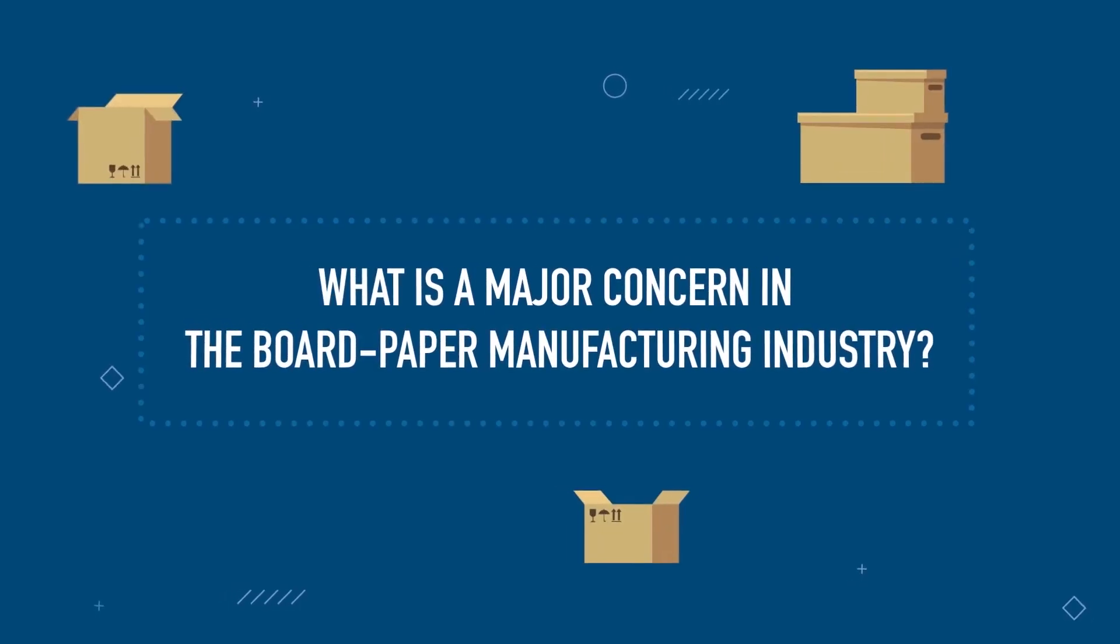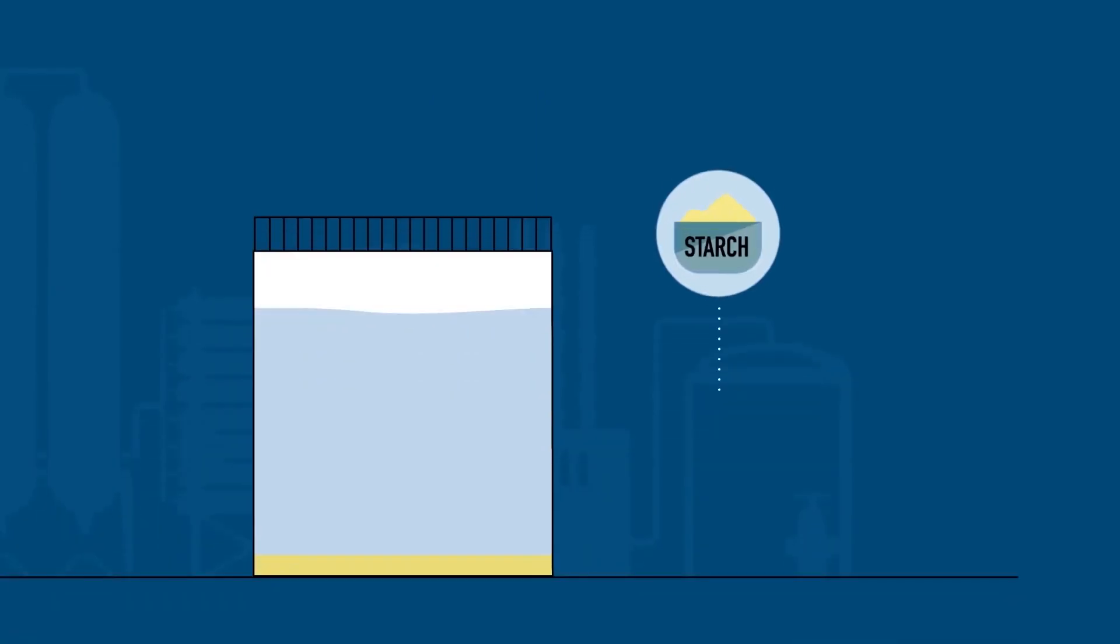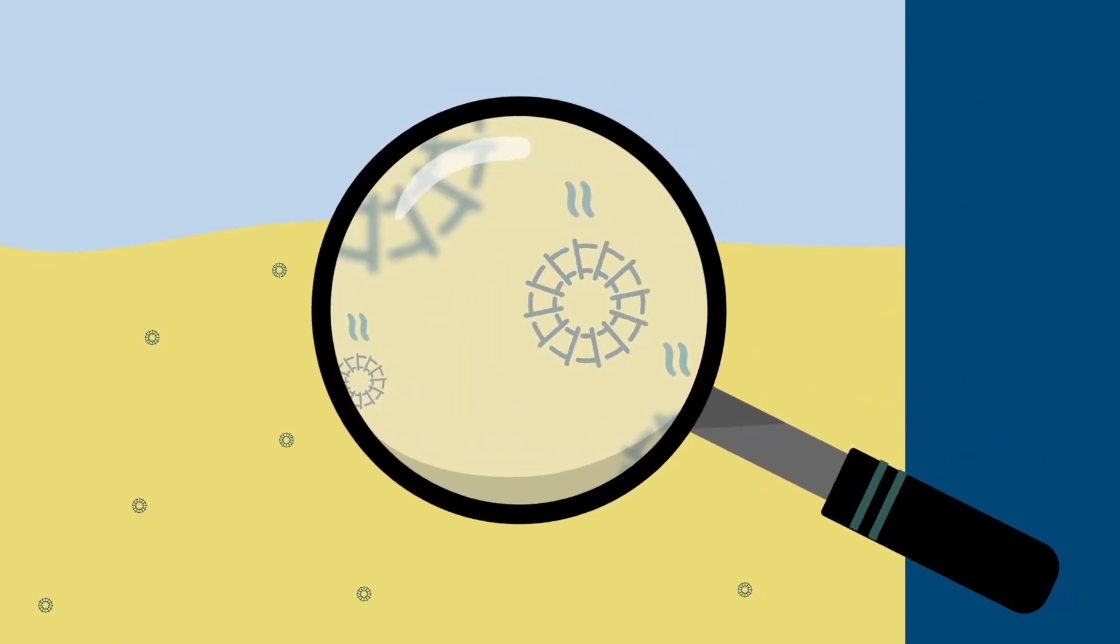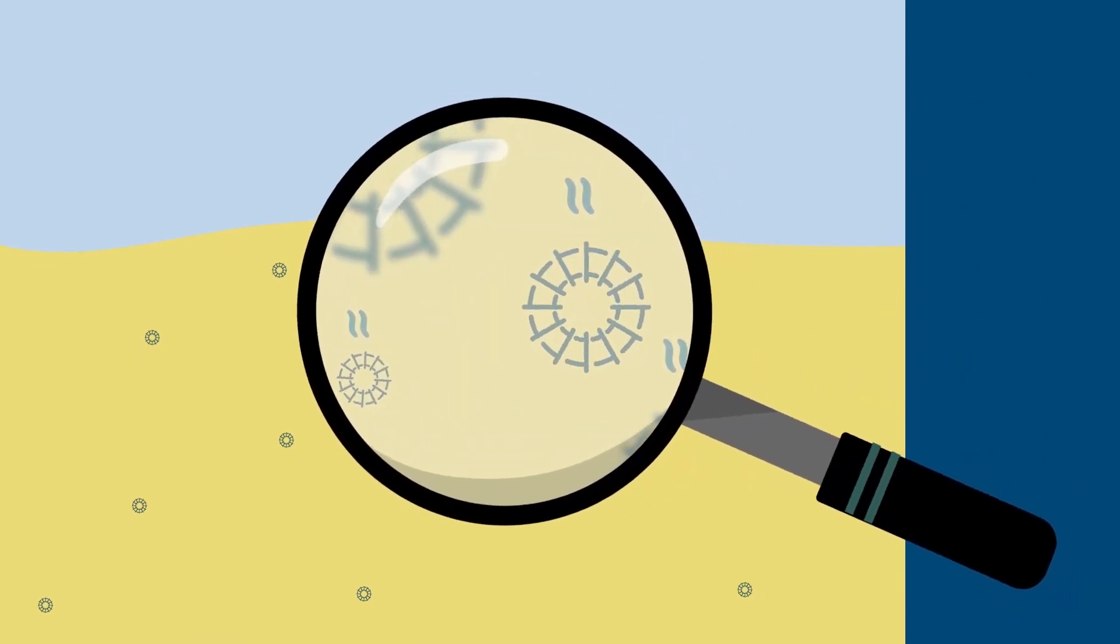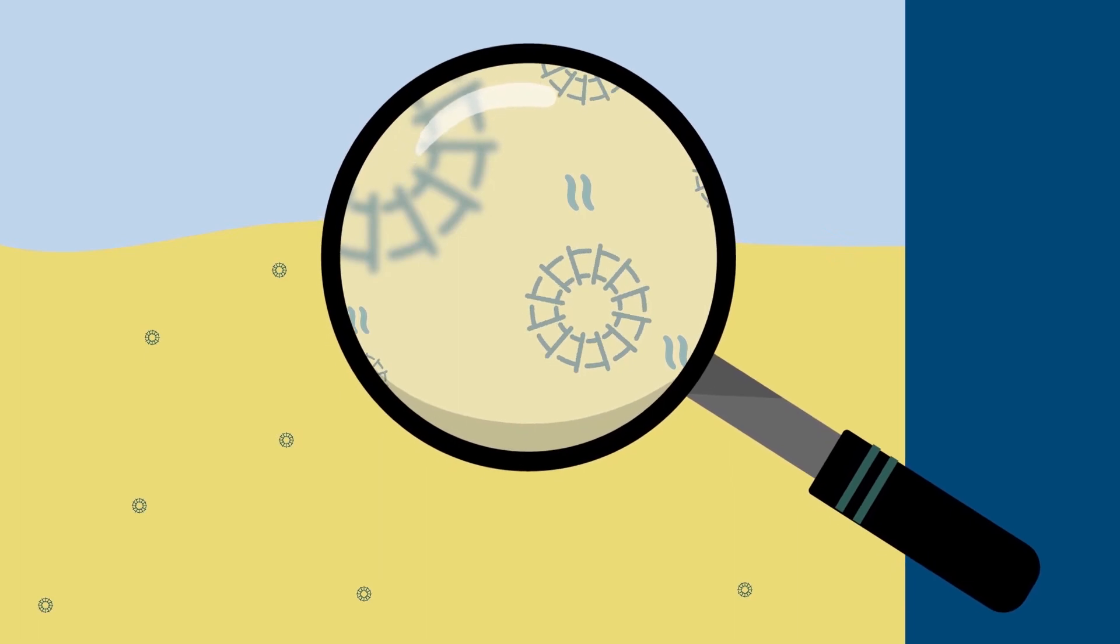What is a major concern in the board paper manufacturing industry? The existence of plenty of bacteria in the system means that oxygen is consumed, the oxidation reduction potential exhibits a negative value, and the entire system is anaerobic.